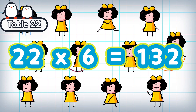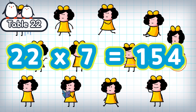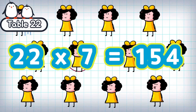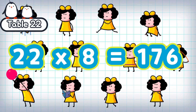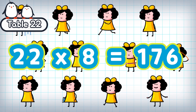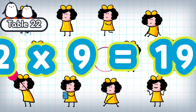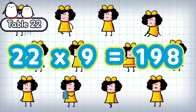22 times 6 is 132. 22 times 7 is 154. 22 times 8 is 176. 22 times 9 is 198.